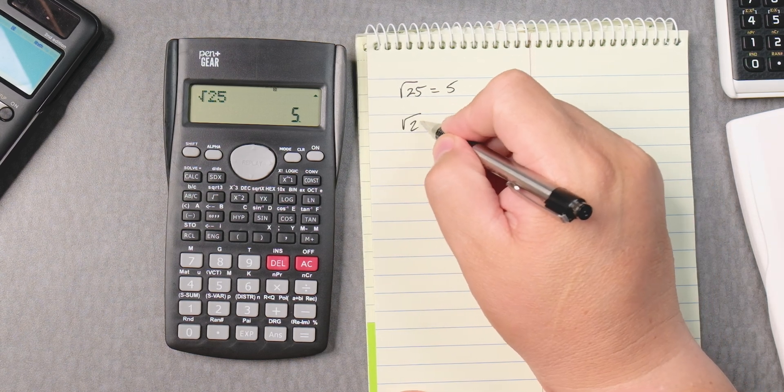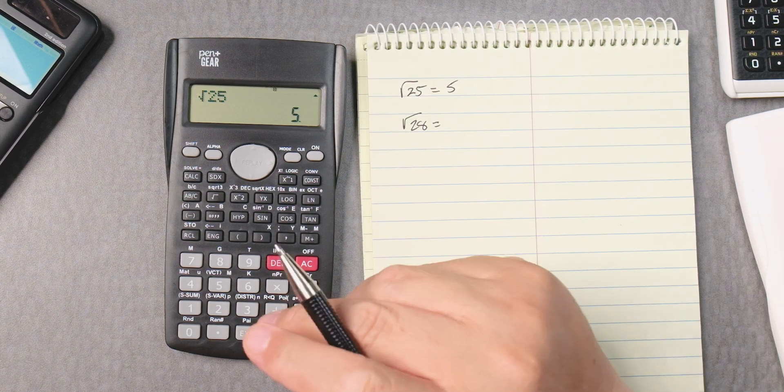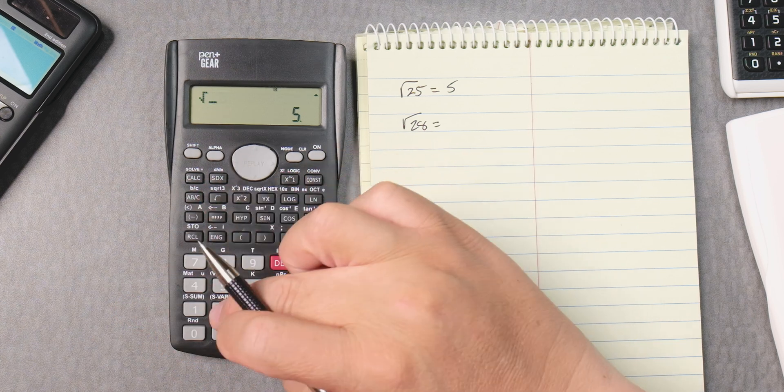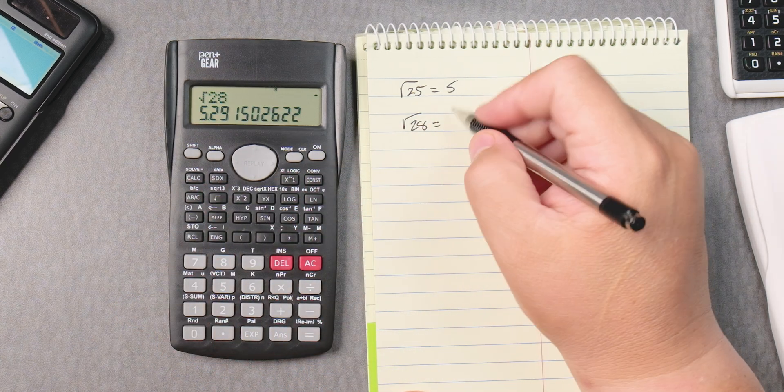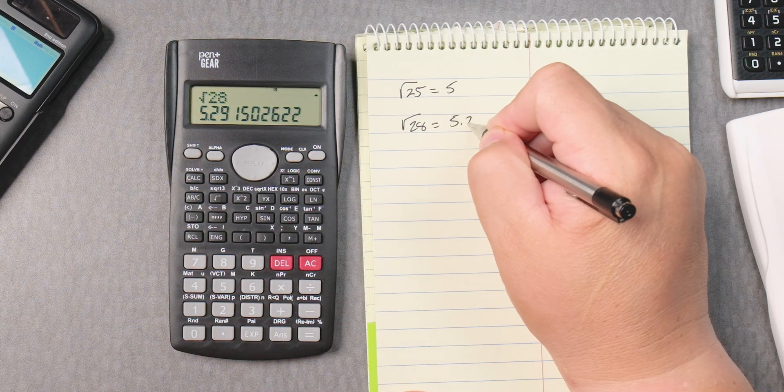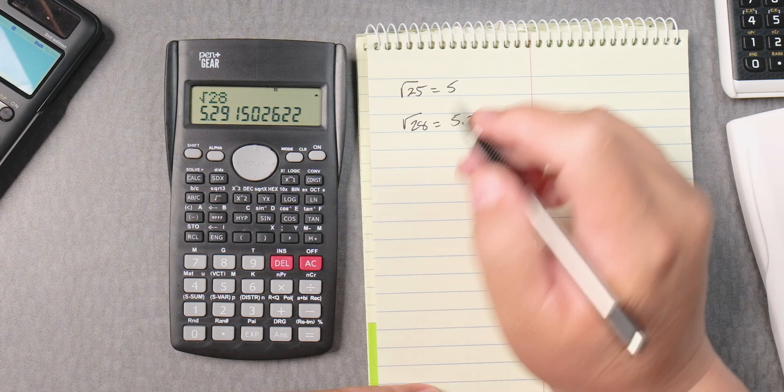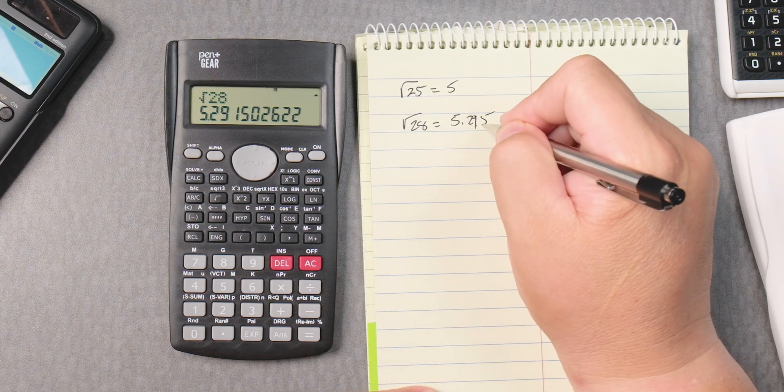Let's say you want the square root of 28 equals. Okay, so take the square root, 28 equals 5.215. There's a 9 there, 915.